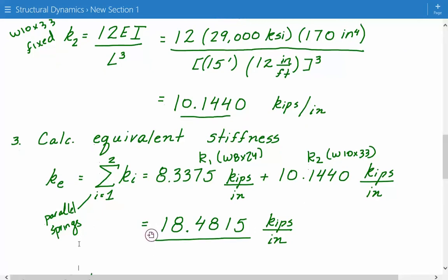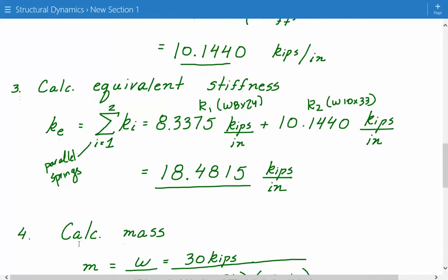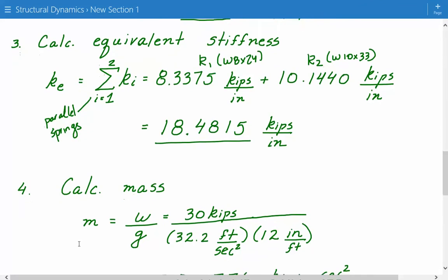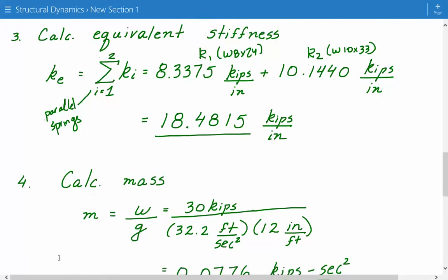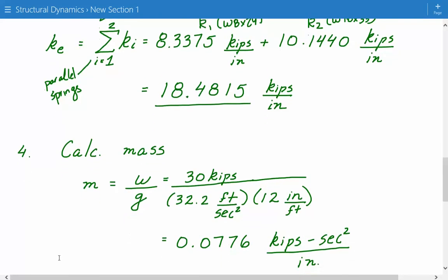Next, we'll calculate the mass, which pertains to the mass that the girder is supporting, that the columns are supporting, that distributed weight, which is 30 kips, which is on the girder. So we just convert that into the mass. So 30 kips divided by the gravitational acceleration, which is 32.2 feet per second. And then we multiply it by 12 to get it into inches. So we have a mass of 0.0776 kips second squared per inch.